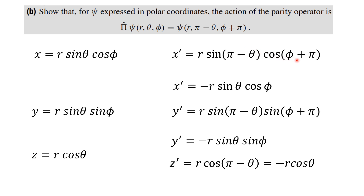In Cartesian coordinates, x = R sin(theta) cos(phi). There is no change in R, but theta is replaced by pi minus theta and phi is replaced by phi plus pi. We know that sin(pi minus theta) equals sin(theta), and cos(phi plus pi) equals minus cos(phi). So x-prime equals minus R sin(theta) cos(phi).